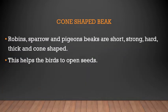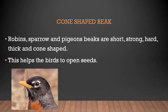Next is the cone-shaped beak. The robin, sparrow, and pigeon have beaks that are short, strong, hard, thick, and cone-shaped. This helps the birds to open seeds.